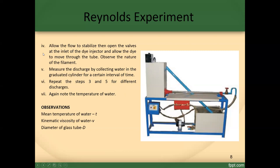Repeat steps three through five for different discharge rates. Six — note the temperature of the water again. For observations: record the mean temperature of water, then from a table obtain the kinematic viscosity of water based on the temperature. The diameter of the glass tube is given.